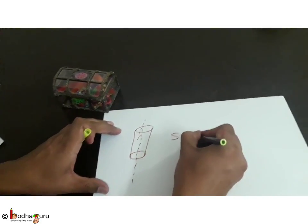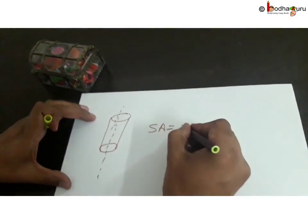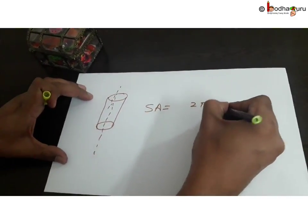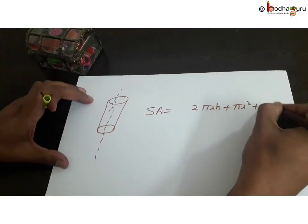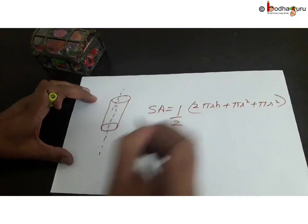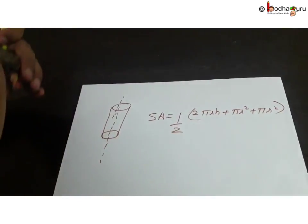the surface area of the cylinder is equal to 2πrh plus πr² plus πr². Because this is half of the cylinder, it will be this much, the surface area of this part.